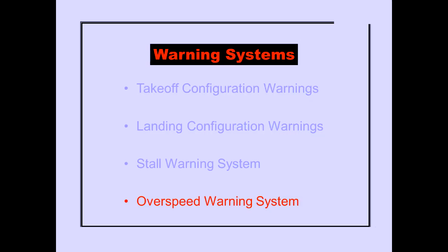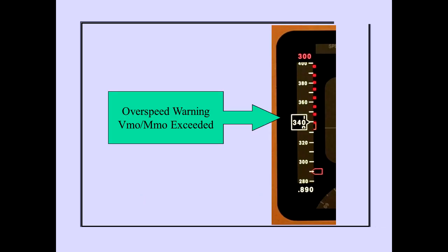The last system to be covered is the overspeed warning system. Whenever VMO/MMO is exceeded, an overspeed warning occurs.